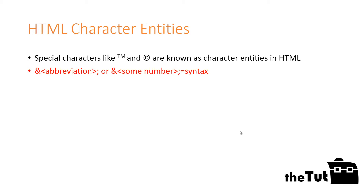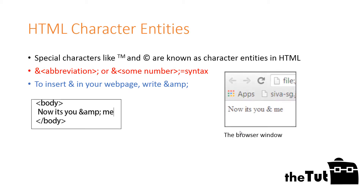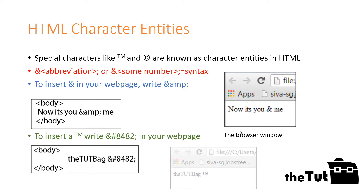Let us take an example of what we just discussed. If you want to use the ampersand character in your HTML page, write &amp;. To add a trademark symbol, you need to write &#8482; in your code.